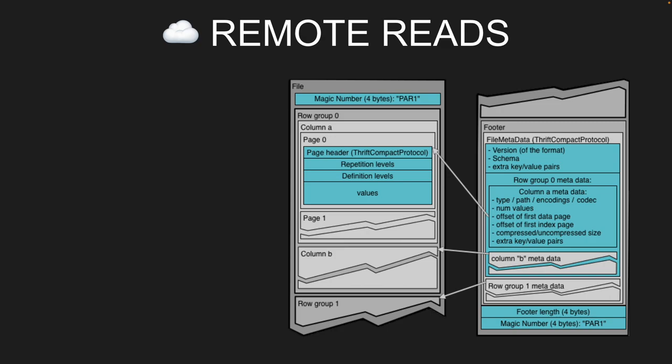This requires understanding the file format. The Parquet file starts with four magic bytes, followed by all data organized by row group — it's columnar-oriented storage, but columns are chunked into row groups. All information for row group one, followed by row group two, et cetera. Within each row group, we get data for each column: row group one column A, then column B, et cetera.